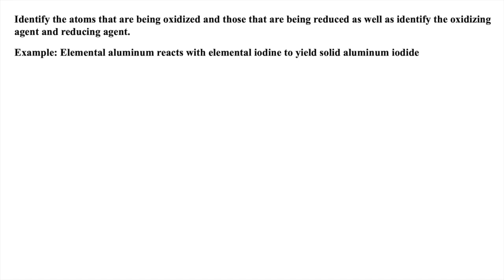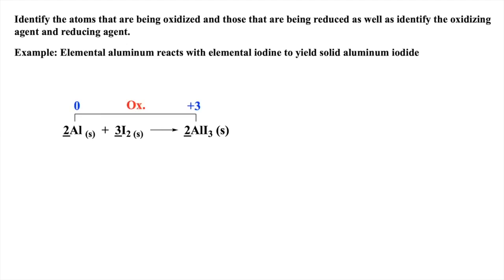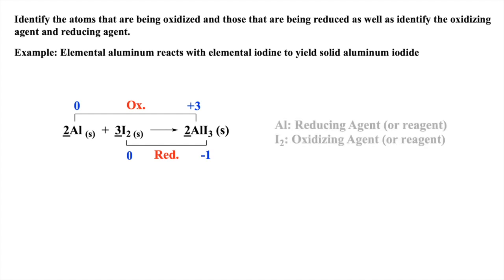Again, drawing from our nomenclature, the first step is to write the balanced equation. Then, examining how the oxidation states of aluminum change, we deduce it is being oxidized, and assigning the oxidation states to the iodine atoms, we deduce they are being reduced. Thus, aluminum is the reducing agent, and iodine is the oxidizing agent.